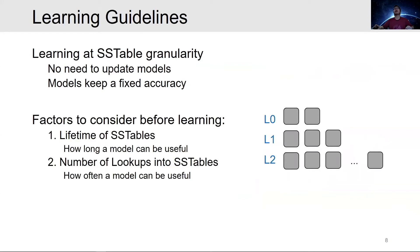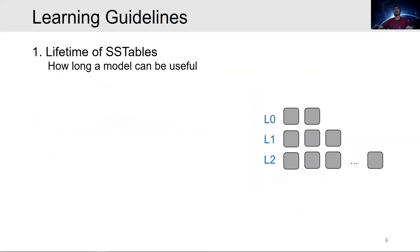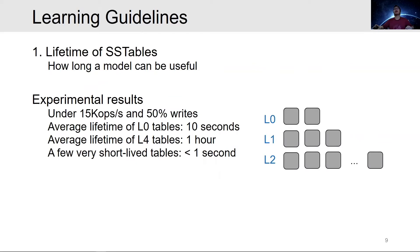There are two important factors if we want to learn at SSTable granularity: the lifetime of SSTables and the number of lookups into them. The lifetime represents how long a model can be useful, and the number of lookups represents how often a model can be useful. We find that the lifetime of tables at lower levels is much longer than those at higher levels — Level 0 tables live for 10 seconds on average, while Level 4 tables live for an hour. Further, there are a few very short-lived tables at every level due to consecutive compactions, with lifetimes less than one second.